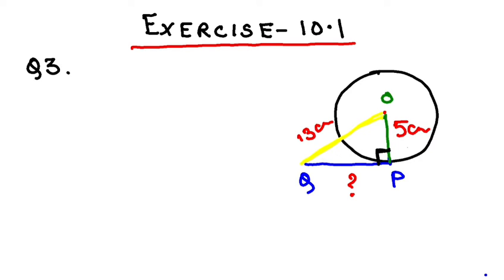Because OP is a radius and it is always perpendicular to PQ, that means triangle OPQ is a right triangle. So if it is a right triangle...